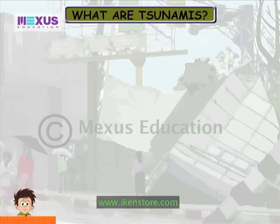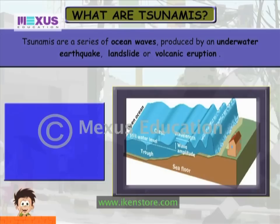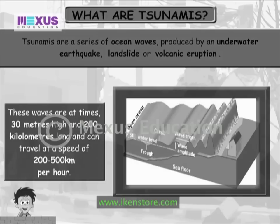What are Tsunamis? Tsunamis are a series of ocean waves produced by an underwater earthquake, landslide or volcanic eruption. These waves are at times 30 meters high and 200 kilometers long, and can travel at a speed of 200 to 500 kilometers per hour.